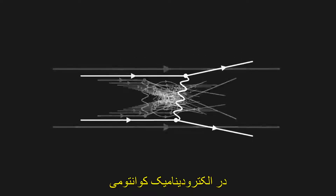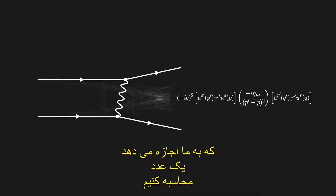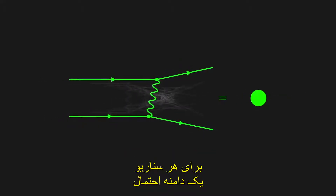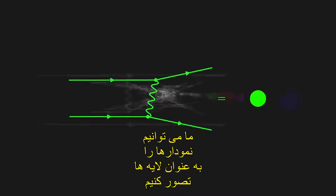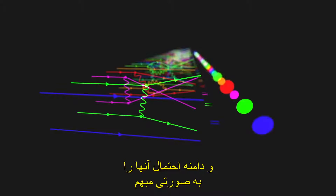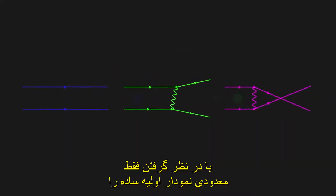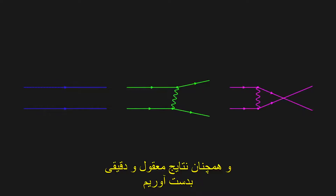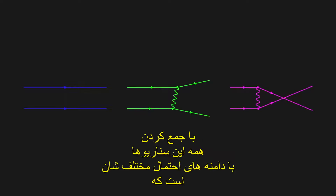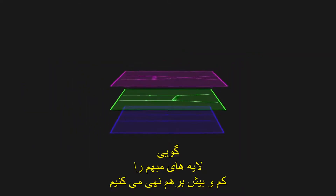In quantum electrodynamics, each diagram corresponds to an equation, which allows us to calculate a number for each scenario — an amplitude. We can imagine the diagrams as layers, and their amplitude as a sort of opacity that sometimes adds up constructively and other times destructively. The many different scenarios have different amplitudes, but for the sake of calculations we can usually neglect the more complex scenarios, considering only the first few simplest diagrams and still get reasonably accurate results. It is by performing the sum of all these scenarios with their different amplitudes, as if we superimposed more or less opaque layers, that we obtain the real evolution of the physical system.